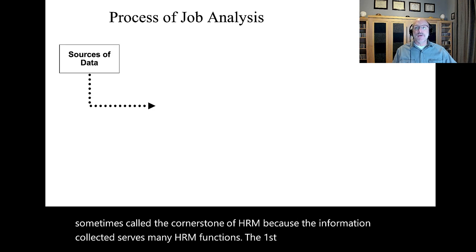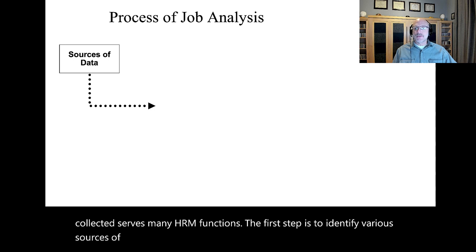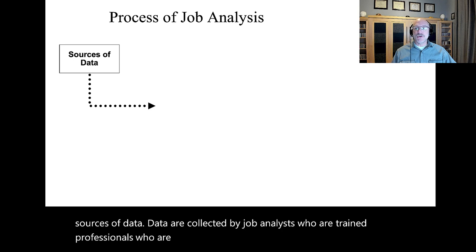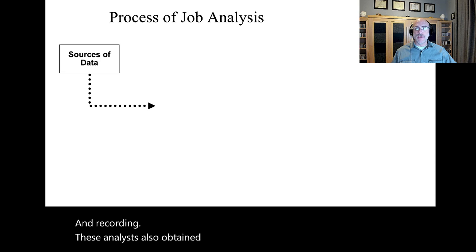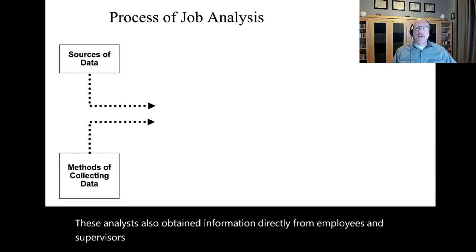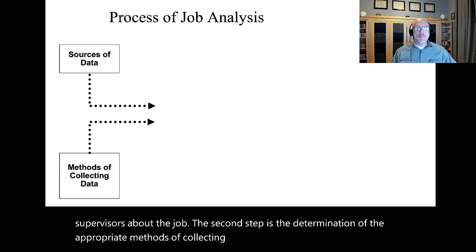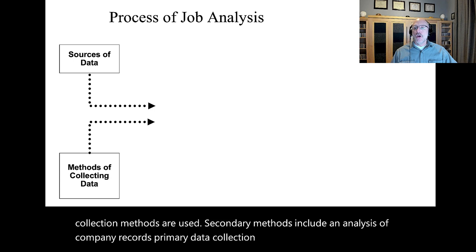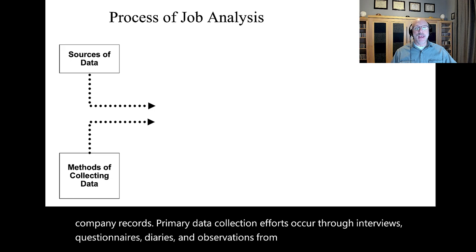The first step is to identify various sources of data. Data are collected by job analysts who are trained professionals experienced in observation, interviewing, and recording. These analysts also obtain information directly from employees and supervisors about the job. The second step is the determination of appropriate methods of collecting data. Both primary and secondary data collection methods are used, including interviews, questionnaires, diaries, and observations.